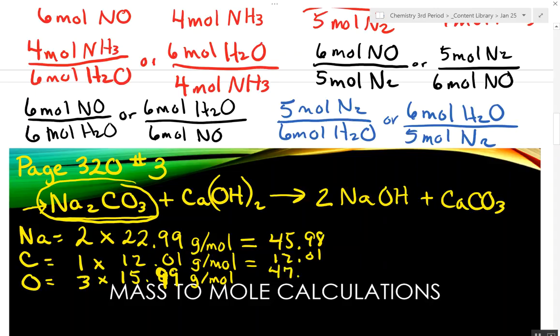Forty-seven point nine-seven. Add them up. Somebody add them up. Okay, so one hundred five point nine-seven grams per mole, one mole. Hold on. Let me restart that.